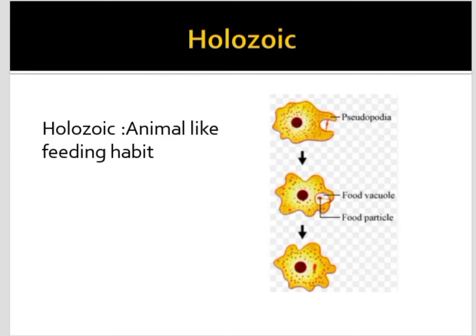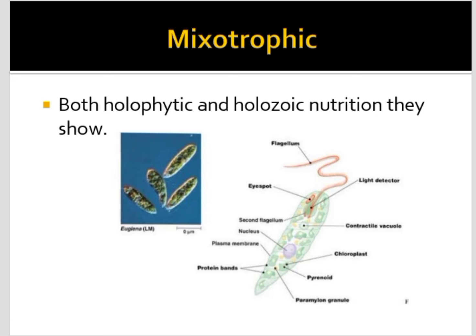In mixotrophic feeding, both holozoic and holophytic types of feeding habits can be shown. In the presence of sunlight, the organism acts as a plant and photosynthesize, and in the absence of sunlight, it acts as an animal.